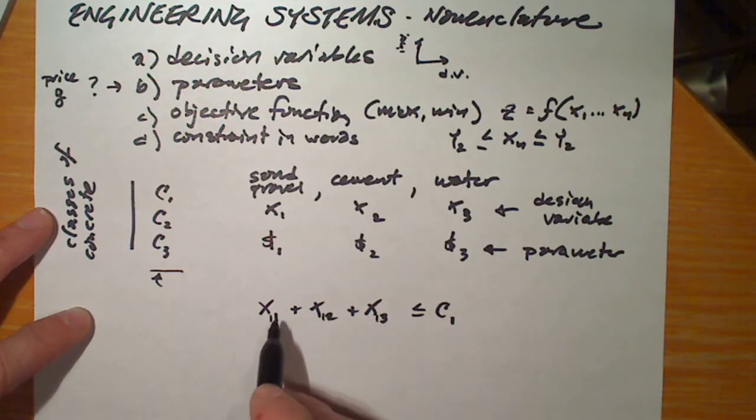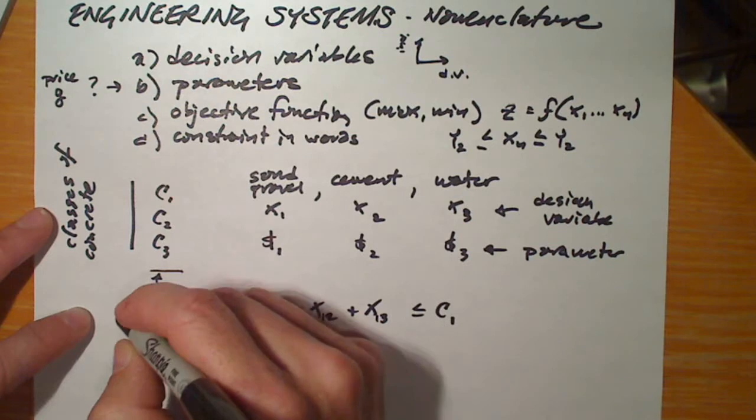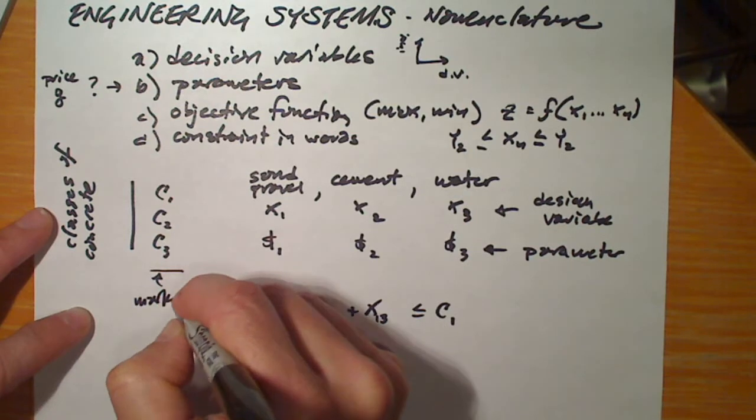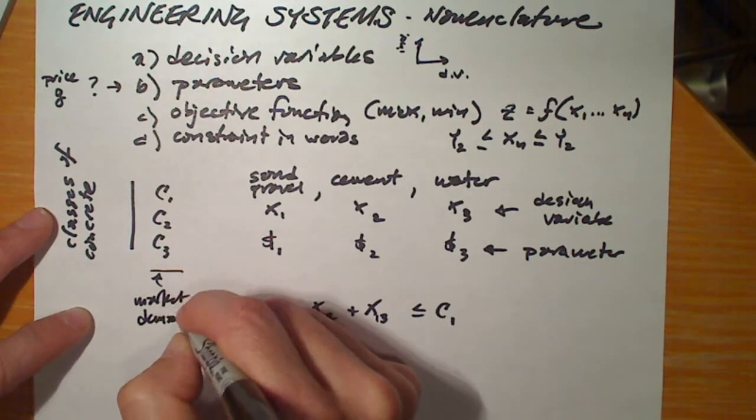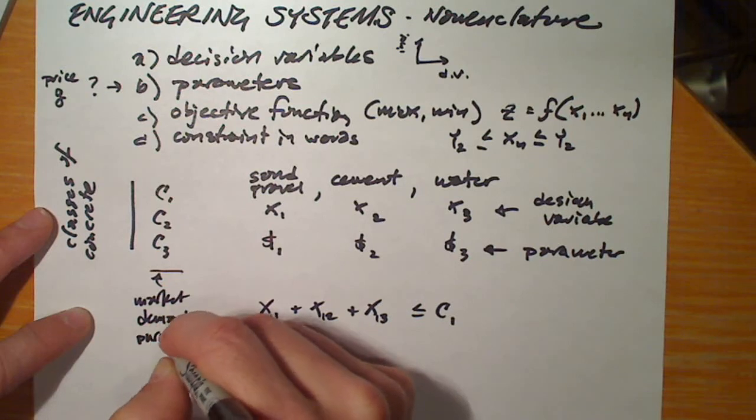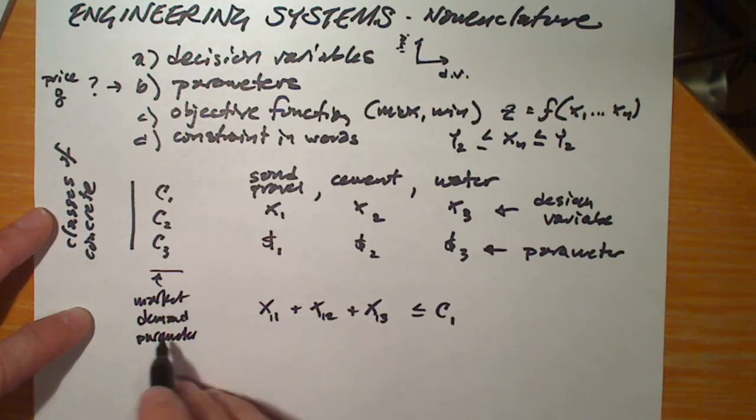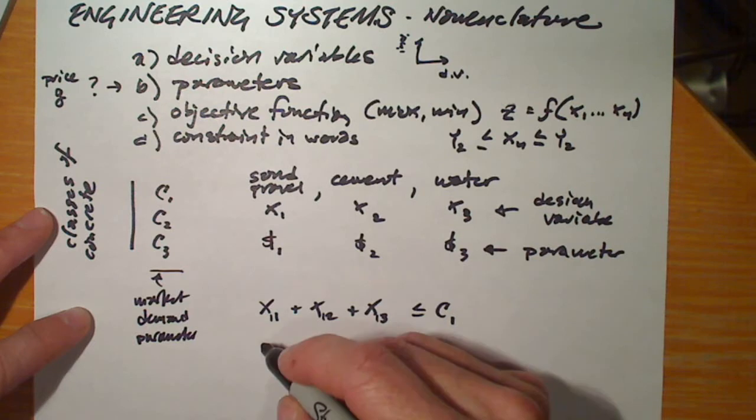Keep in mind, for mix 1, this is the amount of aggregate, amount of cement, and amount of water that goes into meeting the market demand, which we don't control. That's the market demand parameter for this particular mix of concrete.